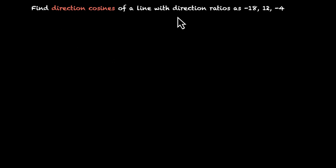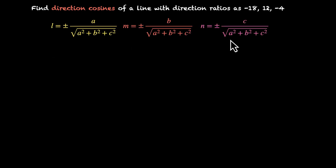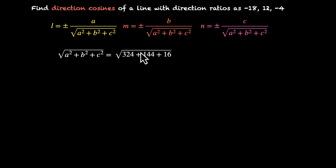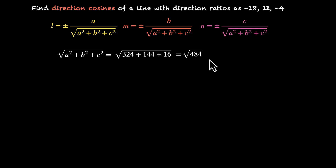Now let's practice. Find direction cosines of a line with direction ratios −18, 12 and −4. So we have A, B and C. Let's first find the constant, then apply the formula for L, M and N. We find √(A² + B² + C²) = √(324 + 144 + 16) = √484 = 22.